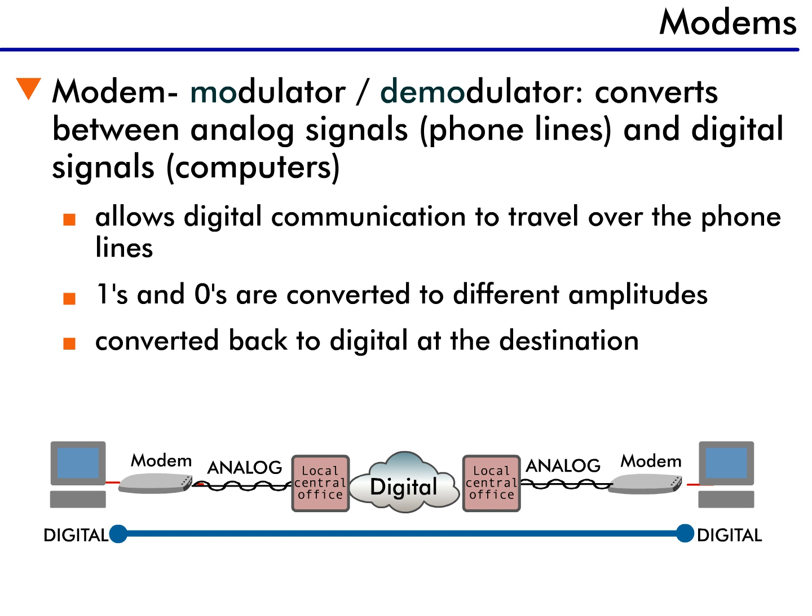The modem takes the digital signals and converts them to analog signals. The ones and zeros are converted to different voltages or amplitudes, just like voice communication. Once this is accomplished, the data is sent over the existing voice network.